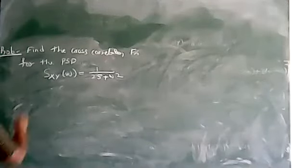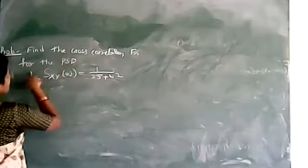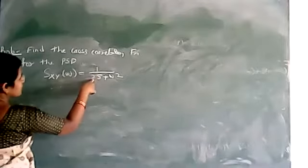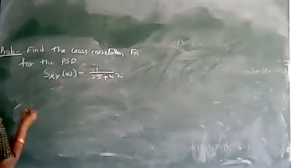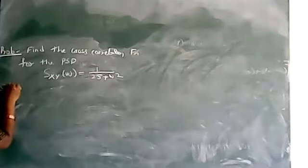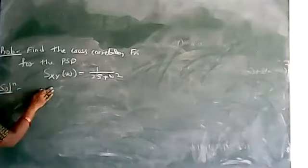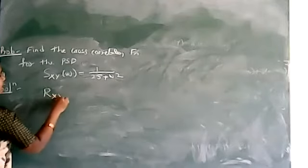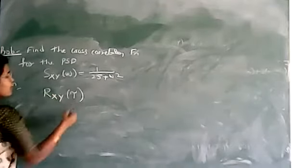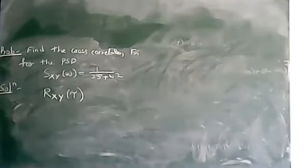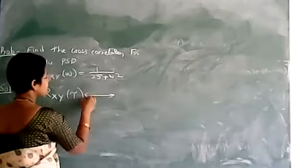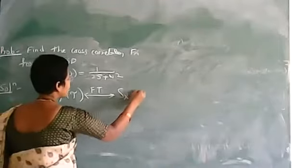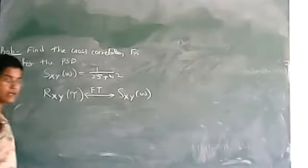The problem is to find the cross-correlation function for the PSD, where S_xy of omega equals 1 by 25 plus omega squared. The cross-correlation, denoted as R_xy of tau, and the cross-power spectral density S_xy of omega form Fourier transform pairs.